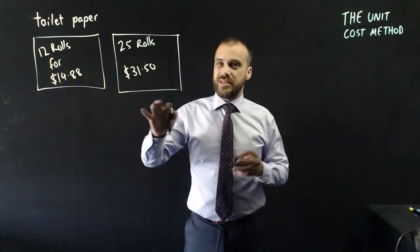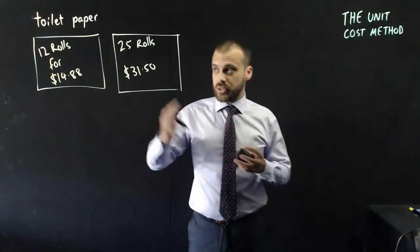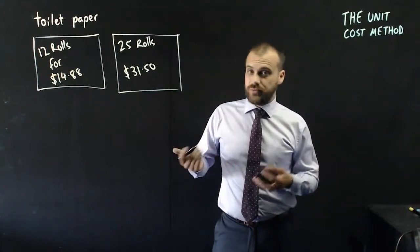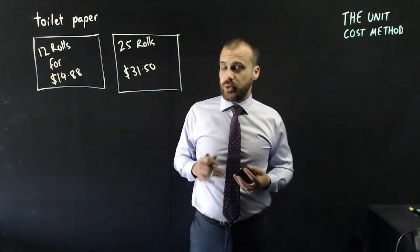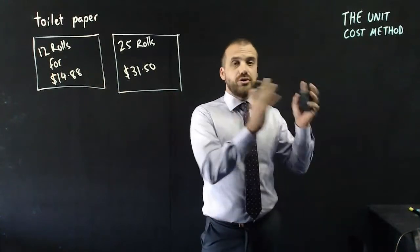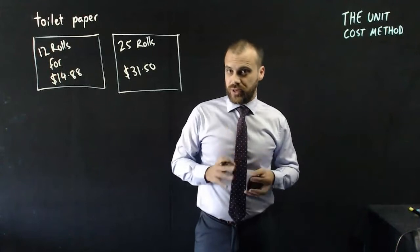Which of these is the better deal? Because I'm going to use a lot of toilet paper anyway over the next 3, 4, 5 months. I may as well have 25 rolls if it's cheaper to buy it like this than it is to buy it like this. And you can use the unit cost method to figure it out.